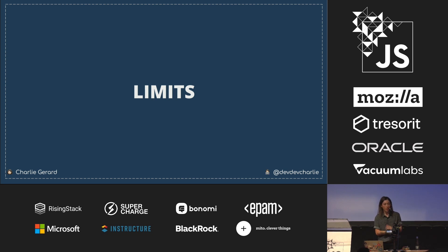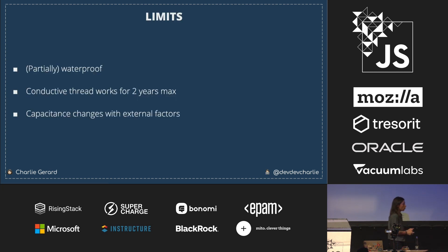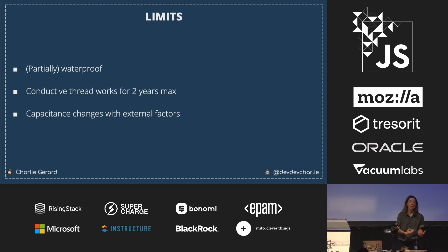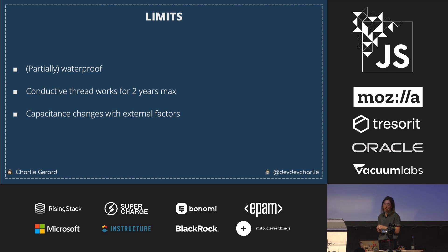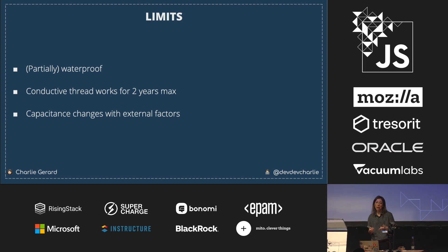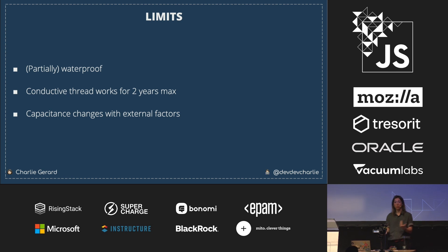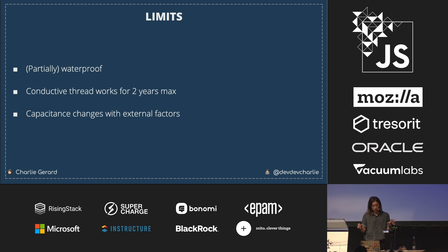There are limits I should mention. It's only partially waterproof — if you wear it on a jacket and it rains, you need to be careful, though you can add a waterproof spray coating. Conductive thread works for a maximum of two years — not that it stops working suddenly, but the readings may change over time. Quite interestingly, capacitance changes with external factors: depending on the weather, if it's humid or dry, the readings and threshold will be different. My threshold was 1000, but on a dry winter day it might be different, so for an outdoor jacket you'll need to take that into consideration.